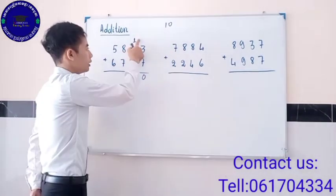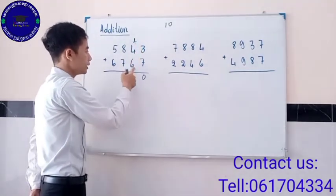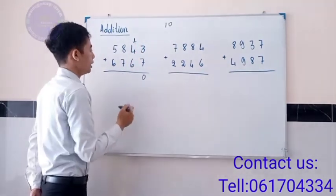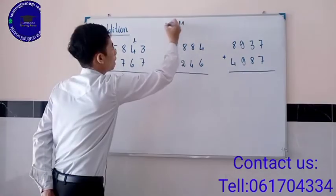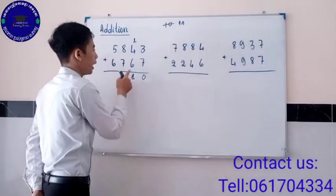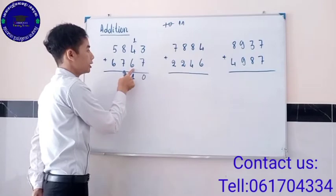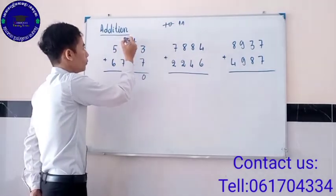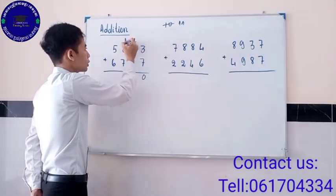Next, when we add 1 and 4 and 6, we get 11. We write 1 under 6 and carry the 1 above 8.